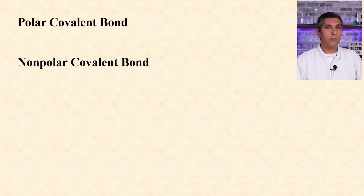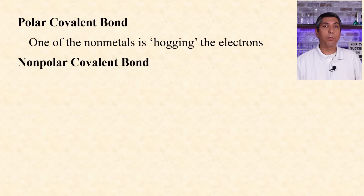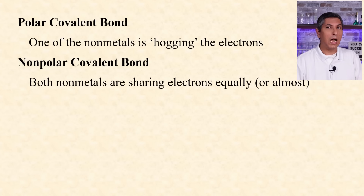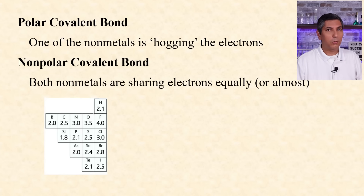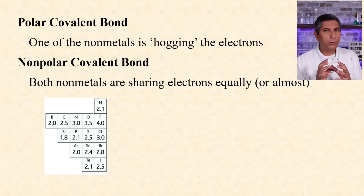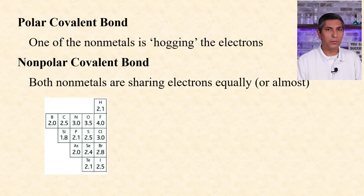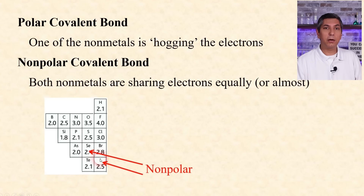We can further classify covalent bonds as polar covalent and non-polar covalent. If one of the atoms in the bond is hogging the electrons, we say it's a polar covalent bond. If the two atoms are sharing those electrons equally or almost equally, we say it's non-polar. To determine if a bond is polar or non-polar, look at the difference between the two atoms' electronegativities. Since you don't get an electronegativity chart on the AP exam, you'll have to rely on how close the atoms are to each other on the periodic table. For example, selenium and iodine are close, so we'd predict their bond to be more non-polar than selenium and oxygen, which are farther away from each other on the table — that bond would be more polar.